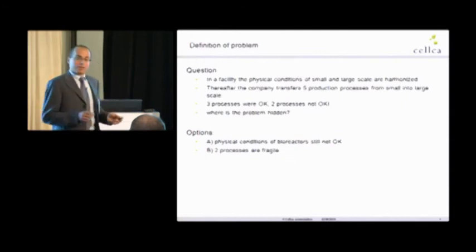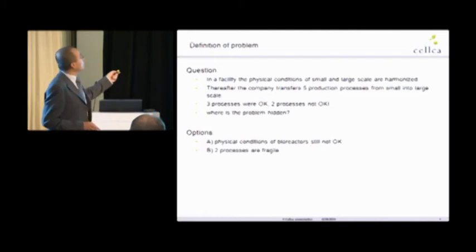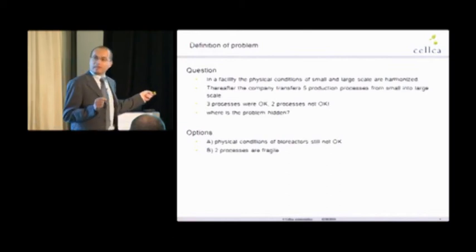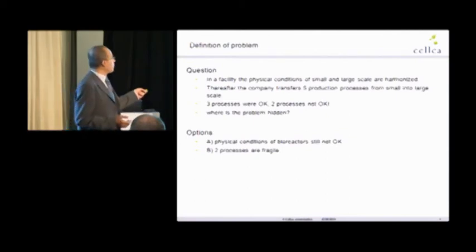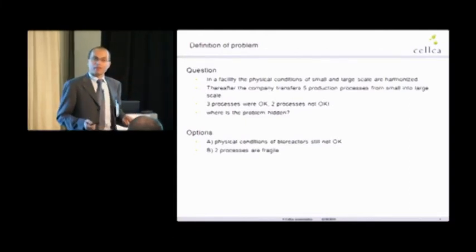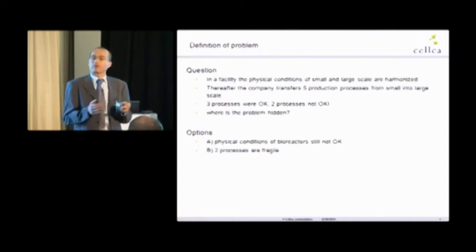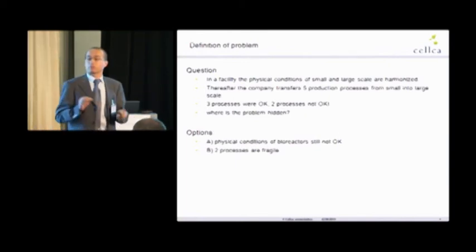Now, it is very important to differentiate between these two options. And that goes to the definition of the problem. Depending on the answer, we might do totally different experiments. When I believe that the two processes are fragile, I do process optimization again. When I believe that physical conditions are not optimal, then I hire a consultant, buy additional software, and try to optimize all these KLA and so on. And try to run the bioreactor in different models. That are totally different experiments. Therefore, it is important to make the definition of the problem right.